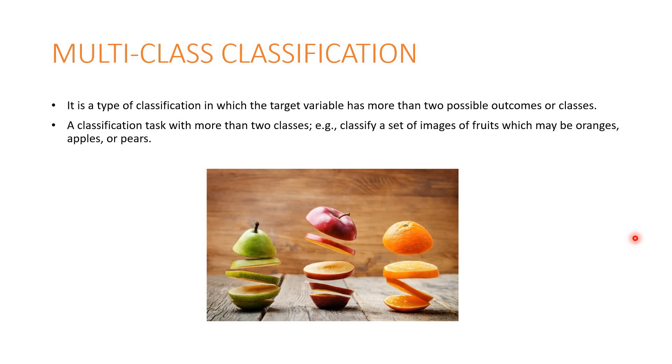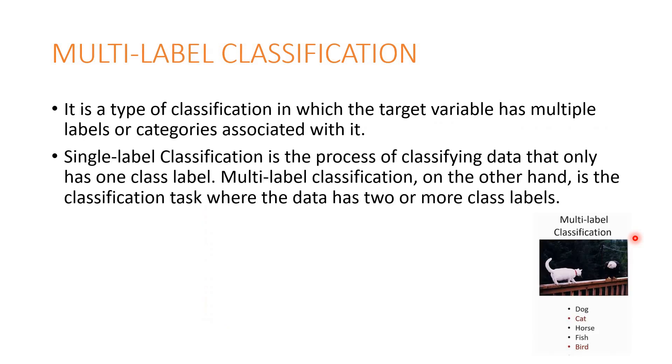It can be banana, it can be apple, it can be pears, or it can be anything. So it's more than two possible outcomes or classes.